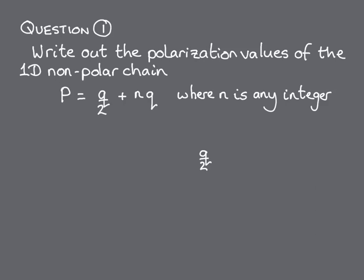Let's start with n equal to 0, which gives us polarization p equal q over 2. Then n is equal to minus 1, which gives us p is equal to minus q over 2. n equals 1 and 2 gives us p equal to 3 halves and 5 halves q. And n equal to minus 2 and minus 3 gives us p is equal to minus 3 halves and minus 5 halves q, and so on.